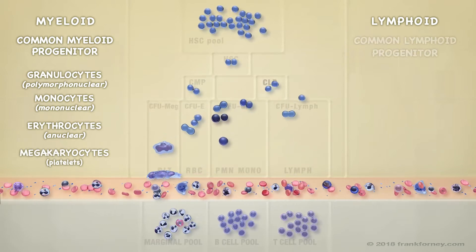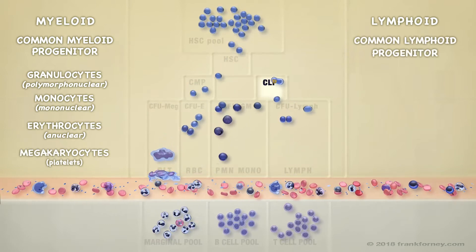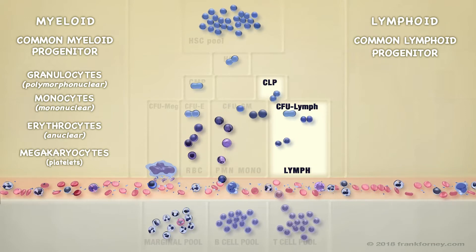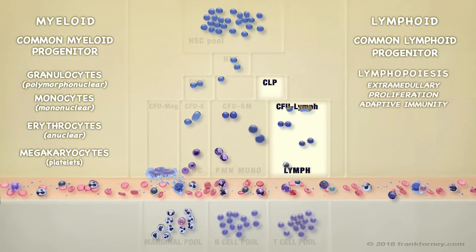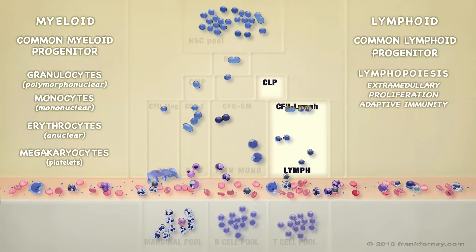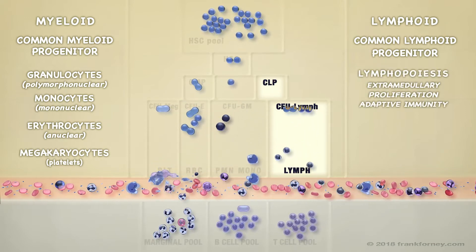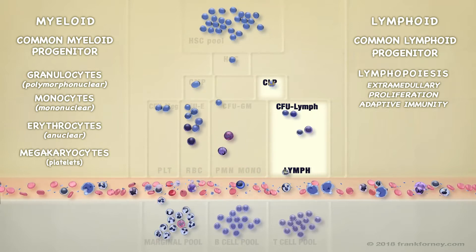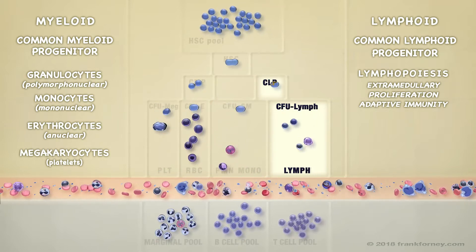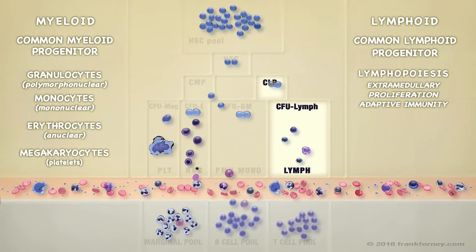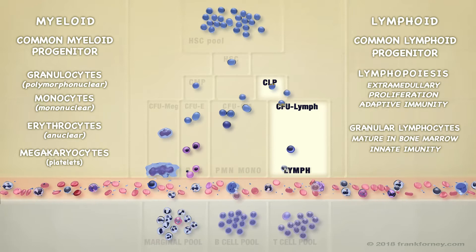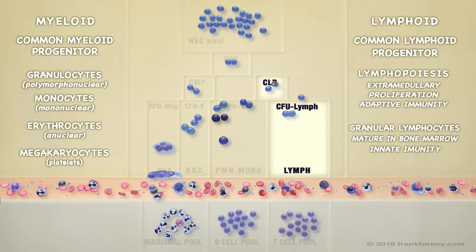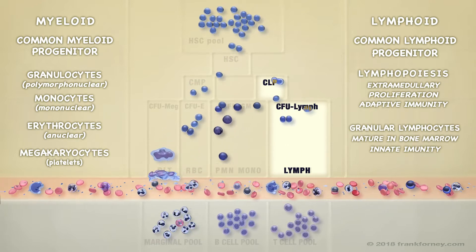The common lymphoid progenitor proliferates into all types of lymphocytes. The majority of lymphocytes leaving the bone marrow are passive — they will circulate until activated, or migrate to lymphoid tissues, where they proliferate.